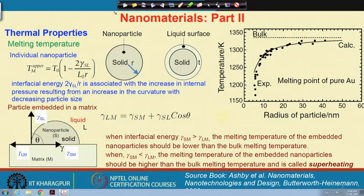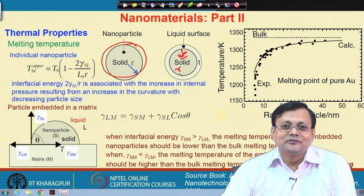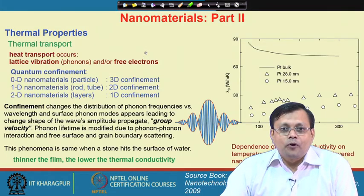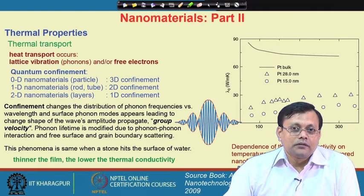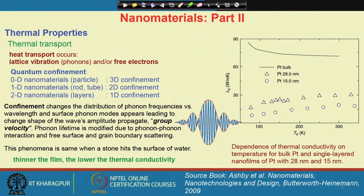Consider a large particle undergoing melting: the internal solid core shrinks and R decreases. Initially melting takes some time, but as the size becomes smaller and smaller, the melting temperature of the particle itself decreases and it immediately dissolves in the liquid. This is one of the very interesting phenomena for nanoparticles in thermal properties. The other important property is thermal transport — whether heat conducted through a nanoparticle is affected.